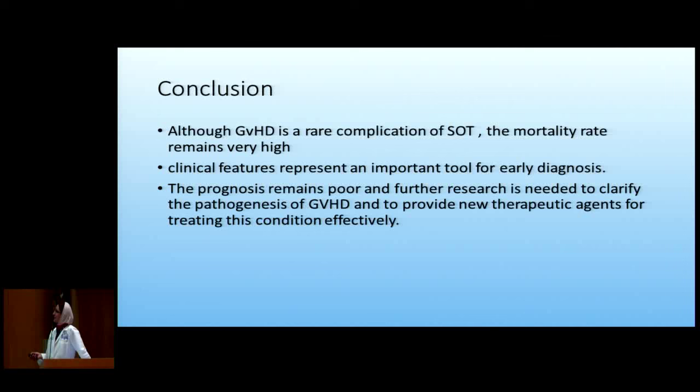In summary: although GVHD is rare, mortality is very high — it's very important to diagnose early. It's a very heterogeneous disease involving many factors: the patient, the recipient, the microbial environment, and immunosuppression. There are potentially a lot of novel therapeutic agents to appear in the future.